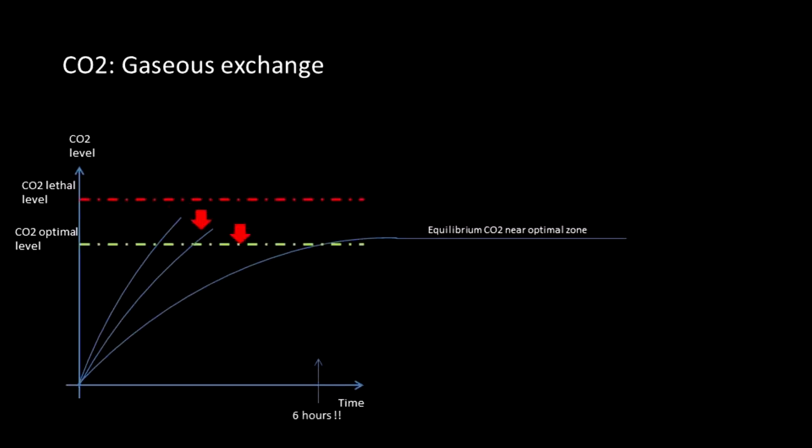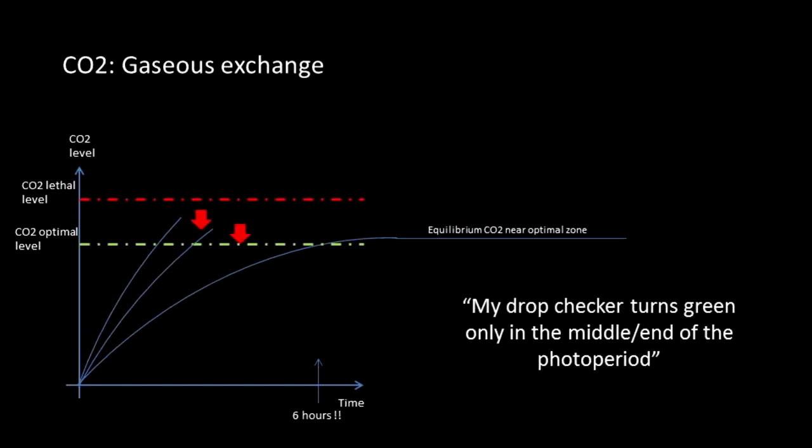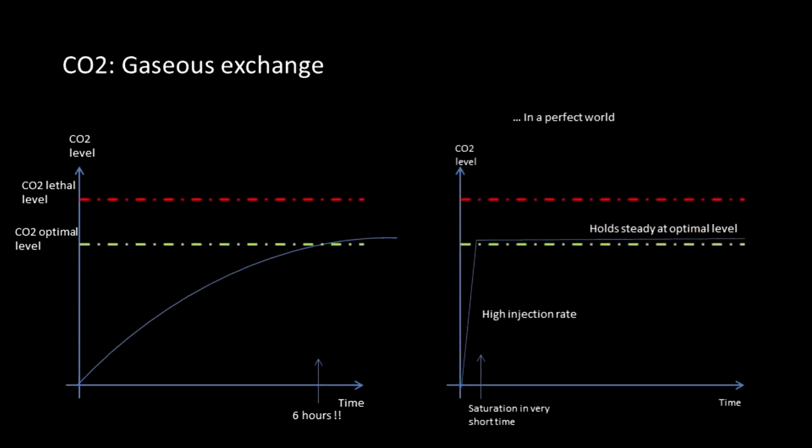However, the problem for many tanks is that to reach a high equilibrium level can take up to six hours or more. This group of aquarists will often claim that their drop checker only turns green or yellow in the middle or end of the photo period. Often this is paired with pearling plants only late in the day.